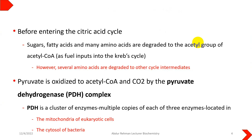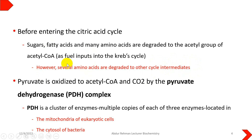Before entering the citric acid cycle, sugars, fatty acids, and many amino acids are degraded to the acetyl group of acetyl-CoA. It acts as a kind of fuel input into the Krebs cycle and is the common intermediate to all these biomolecules. However, amino acids can also be degraded to other cycle intermediates and may have other metabolic routes as well.